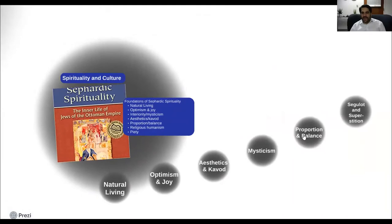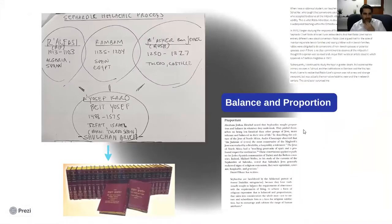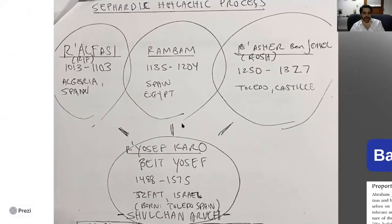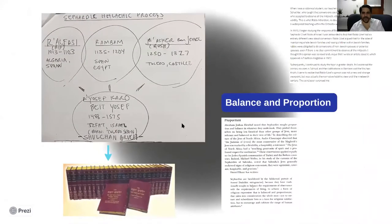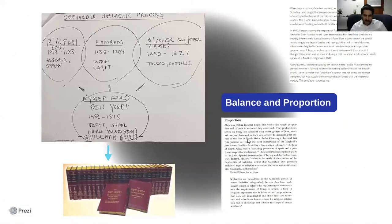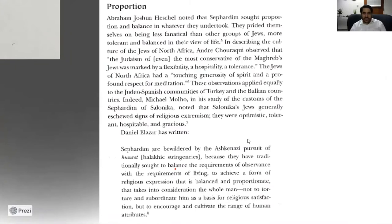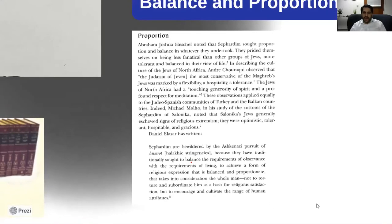We're moving into proportion and balance, still in Sephardic spirituality. Abraham Joshua Heschel noted that Sephardim saw proportion and balance in whatever they undertook - they pride themselves on being less fanatical than other groups of Jews, more tolerant and balanced in their view of life.